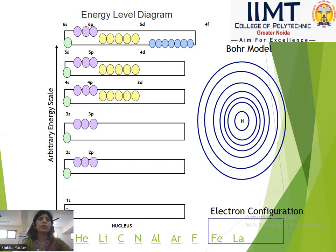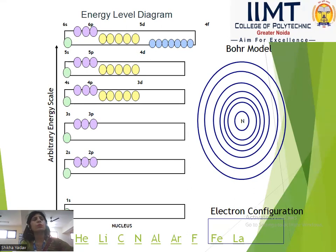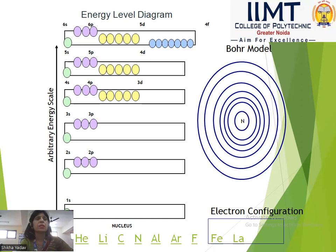The distribution of electrons in energy shells is known as the electronic configuration. It is based on the Bohr-Bury rule. What does the Bohr-Bury rule state?